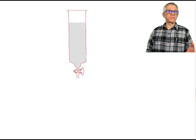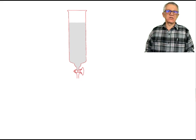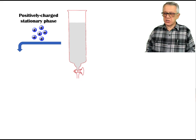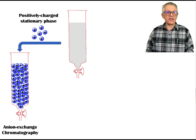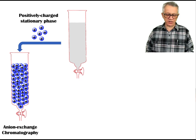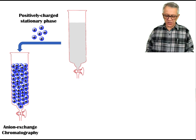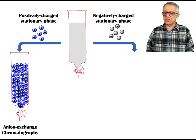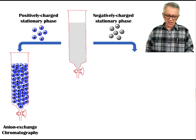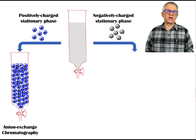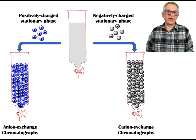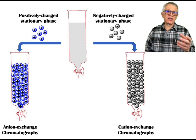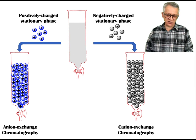Depending on the protein that you analyze, we may want to use a positively charged stationary phase — in that case we have anion exchange chromatography. Or if your protein is positively charged, we can use a negatively charged stationary phase to make sure your protein binds to it. In that case, we have cation exchange chromatography, like the first example we discussed here today.